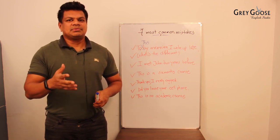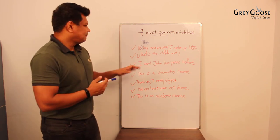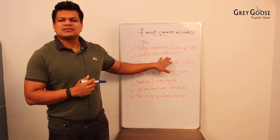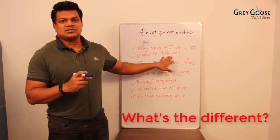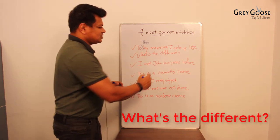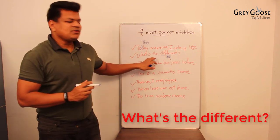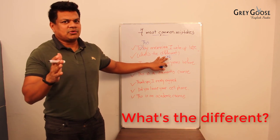mistake. 'What's the different? What's the different?' Different, as you know, is an adjective. So if you use this sentence 'What's the different?' it doesn't become a correct sentence. So it should